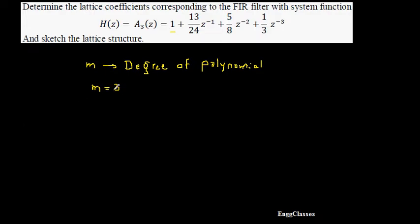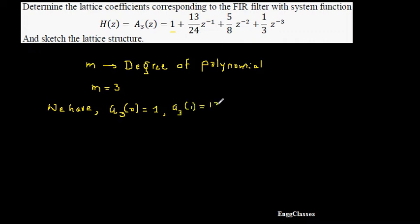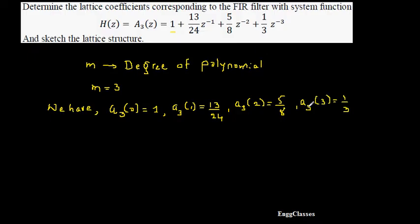Once we know the highest degree of the polynomial, M is equal to 3. We can write the coefficients: a3(0) is equal to 1, a3(1) is equal to 13/24, a3(2) is equal to 5/8, and a3(3) is equal to 1/3. When M is equal to K, I call this aK itself. These are the coefficients we are interested in.